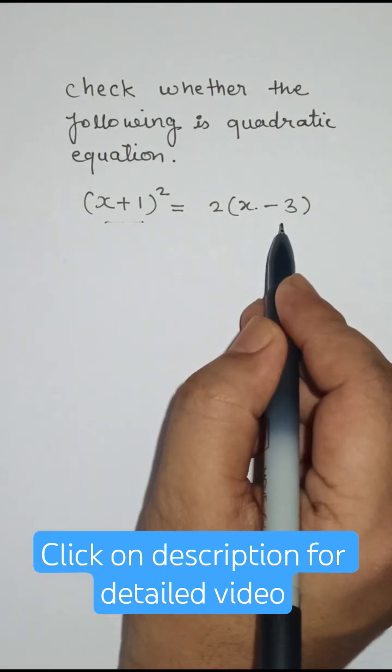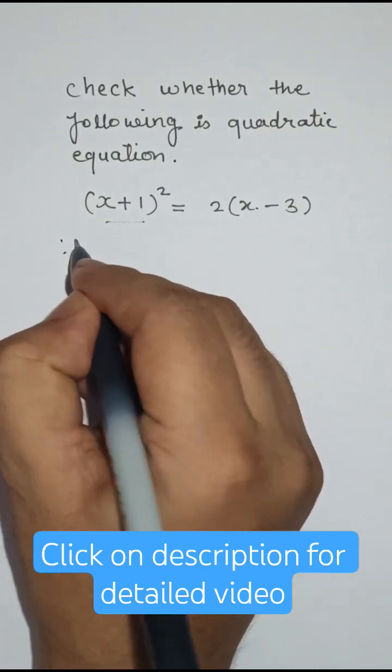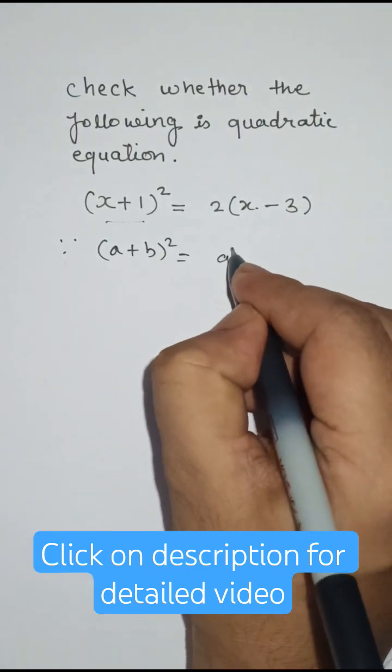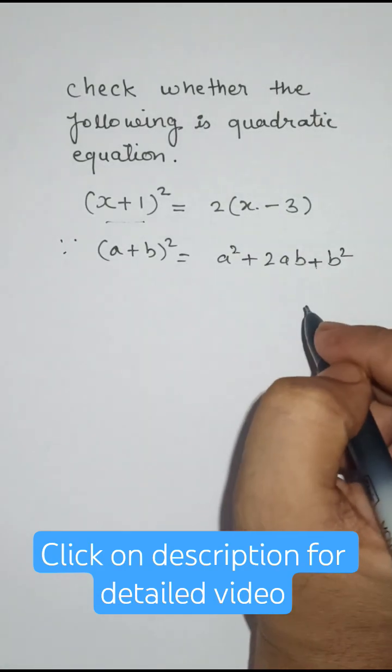We will check if this equation is a quadratic equation or not. We will simplify (x+1)² and use the formula (a+b)² = a² + 2ab + b².